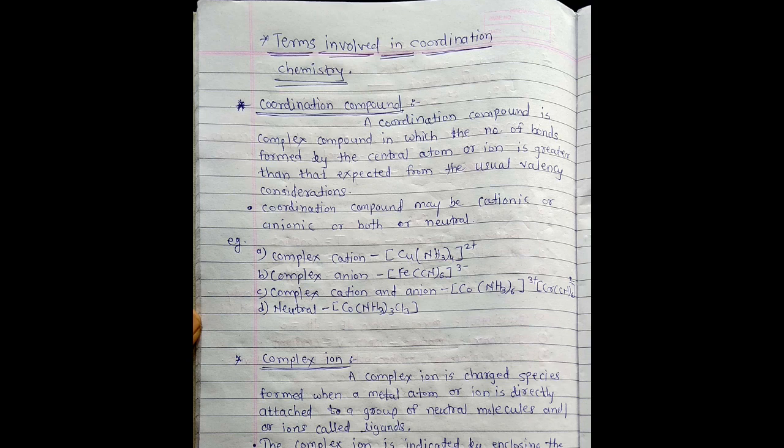First useful term in coordination chemistry is coordination compound. A coordination compound is a complex compound in which number of bonds formed by the central atom or ion is greater than that accepted from the usual valency consideration.